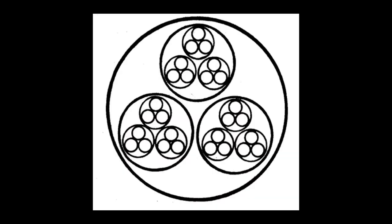Morphogenetic fields in higher organisms are organized in a hierarchic way. All of nature is made up of nested hierarchies. The little circles could be subatomic particles; the next big circles could be atoms; then molecules; then crystals. At each level there's an organizational form which contains parts which are themselves forms at a lower level. Each of these levels is organized by a morphogenetic field — crystals too have morphogenetic fields.